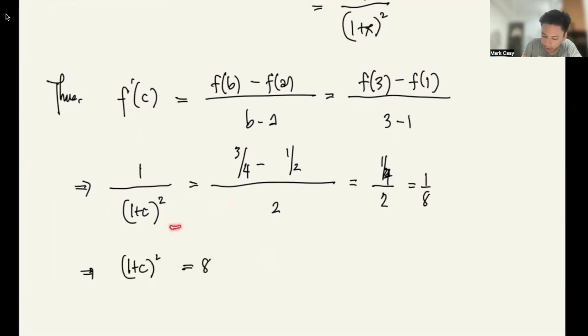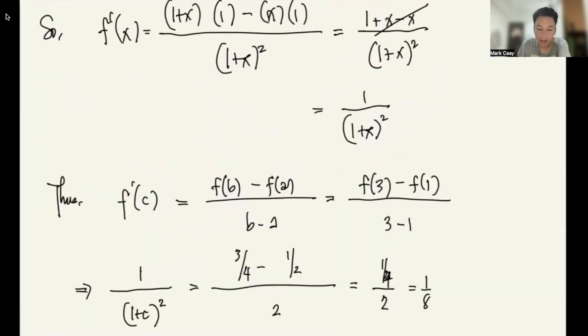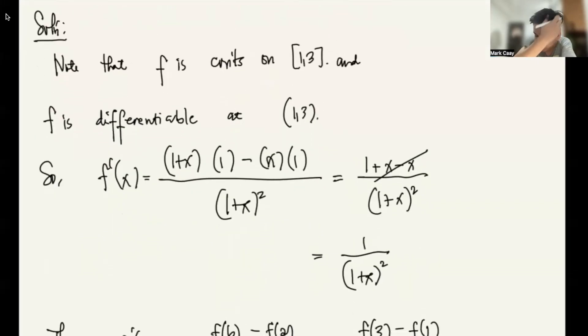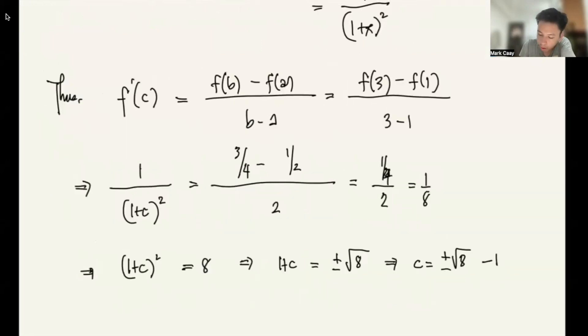So in other words, (1+c) squared equals 8, because they just cross. So 8 equals 1 plus c squared. This implies that 1+c equals plus or minus square root of 8, or I can write that as c equals plus or minus square root of 8 minus 1. The restriction for the interval is [1,3]. Square root of 8 is approximately 2 point something. So if this is positive, it fits in the interval. If this is negative, they're all negative, so it won't fit. So therefore, your c equals square root of 8 minus 1. So that is the root you are looking for. If you have any questions or clarification, please let me know.